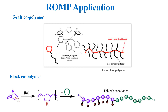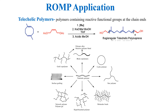We can also synthesize block copolymers and graft copolymers. Ring opening metathesis polymerization is also used to synthesize telechelics polymers, which contain reactive functional groups at the chain ends. Therefore these polymers are capable of entering into further polymerization or other types of reactions.